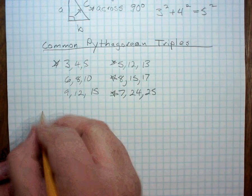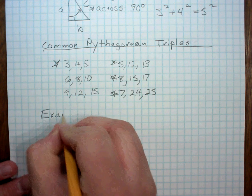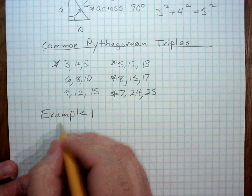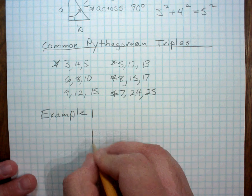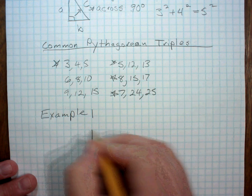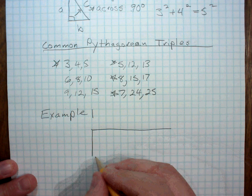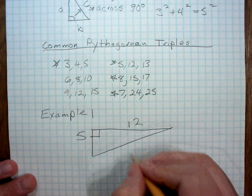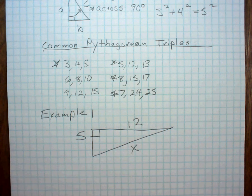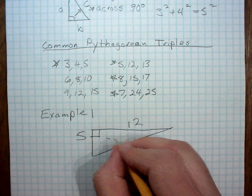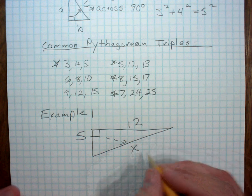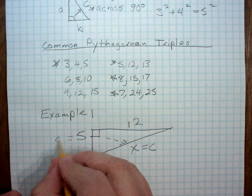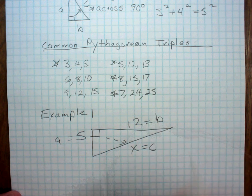And so what we're going to do for example number one is we are going to solve, and this is not drawn to scale, but we're going to solve this one. So this is 5, and this is 12, and we want to know what X is. Well, remember that the hypotenuse is across from the 90 degree angle. So this is the letter C, and this would be A, and this would be B.